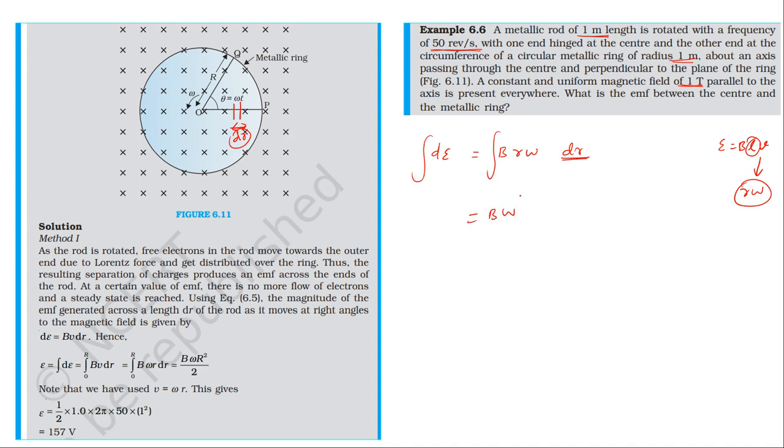Integrating the total EMF: B constant, omega constant, integral of R dR. Integrating from 0 to capital R, we get B omega times R squared by 2, upper limit minus lower limit. So the induced EMF is B R squared omega by 2.